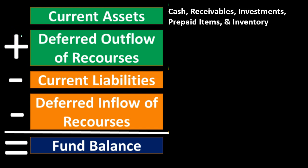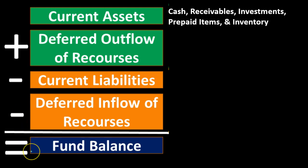We have an added category of deferred outflows of resources, which aren't exactly assets but are a result of the modified accrual basis and will increase the fund balance as assets would. Then we subtract current liabilities, focusing on short-term cash flows, and deferred inflows of resources — items that aren't the same as liabilities but have the same net effect on the fund balance, which is equivalent to the equity section.